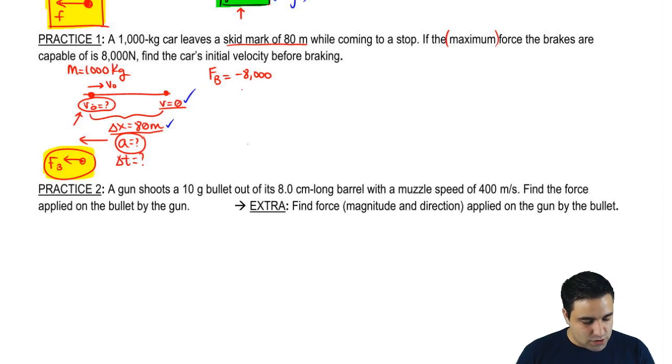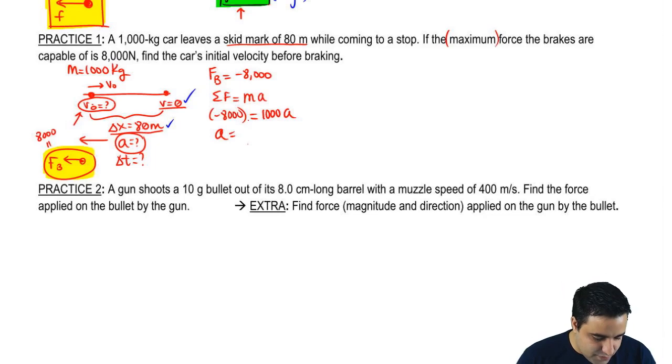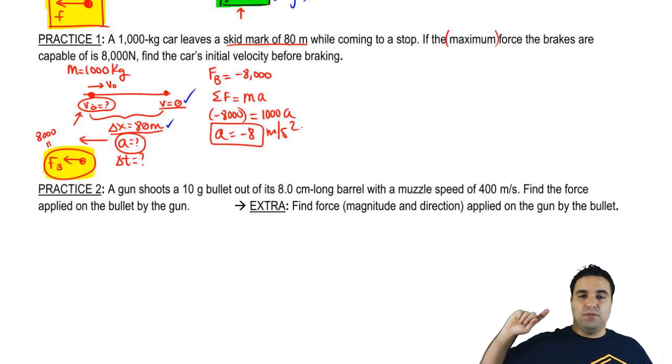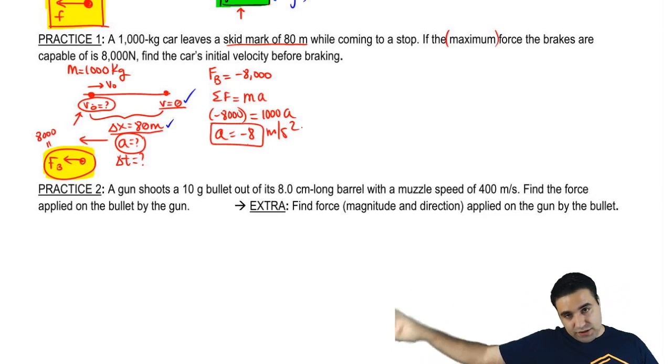So I'm going to go, the sum of all forces equals ma. The only force is this negative 8,000. Notice that the magnitude of this force is 8,000. And it's going to the left, so I have to plug it as a negative 8,000. The mass of the car is 1,000. So the acceleration is, if you divide it, negative 8 meters per second squared. It should make sense, the force is to the left, which is negative in this problem. So the acceleration should be to the left as well, which is negative.